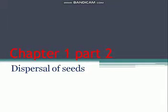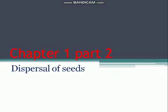Hi students, in lesson number one — growing plants from seeds — in the previous part you learned about the growing of plants from seeds, the parts of seeds, germination of seeds, and the conditions necessary for germination. Now today we are going to learn about dispersal of seeds.